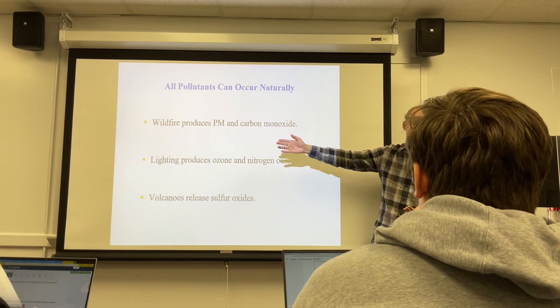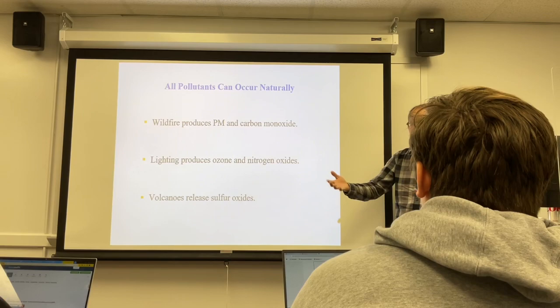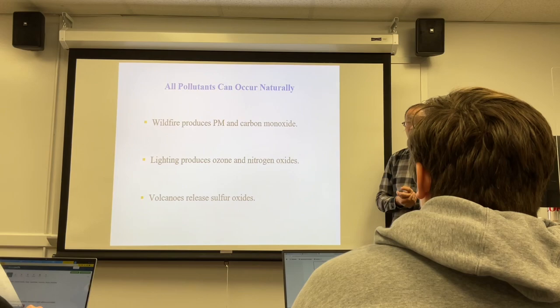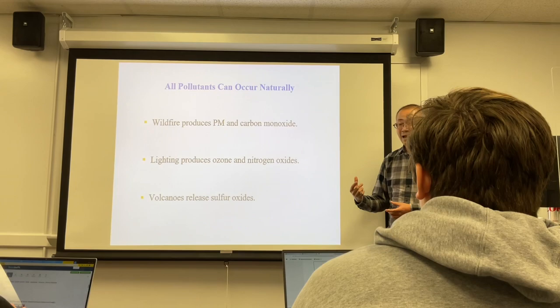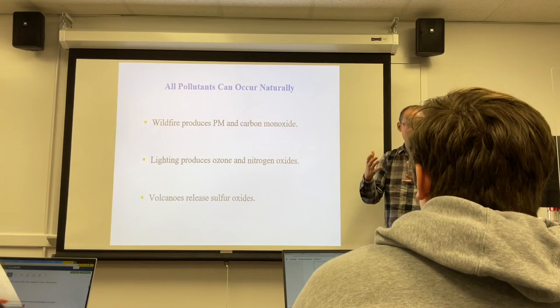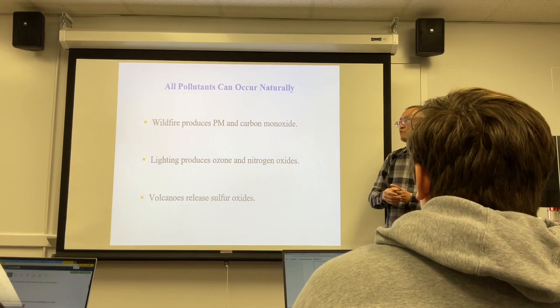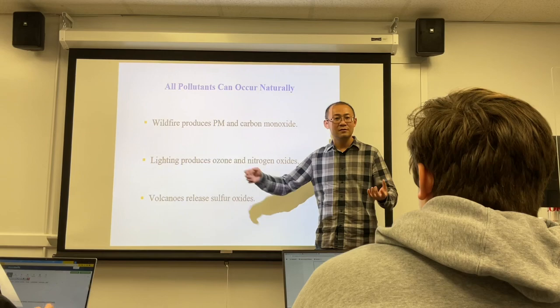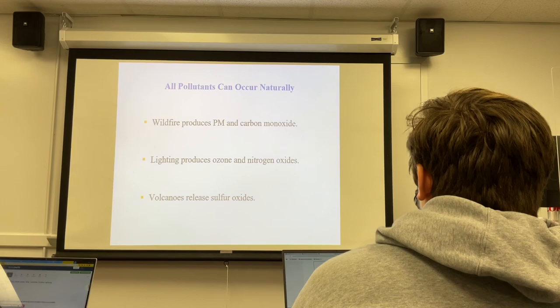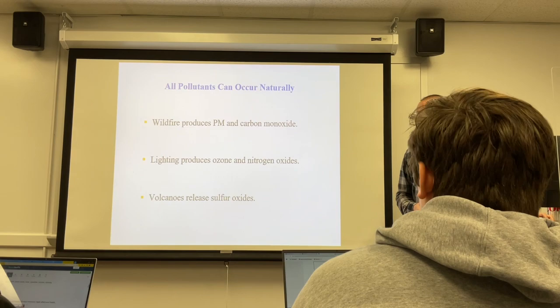Wildfires produce PM and CO. Lightning produces nitrogen oxides and ozone because of its high energy. Volcanoes release a lot of sulfur near high temperatures, so the sulfur is oxidized into sulfur oxides. You need to know these natural events that also generate bad gases.